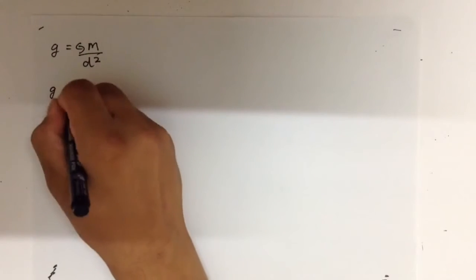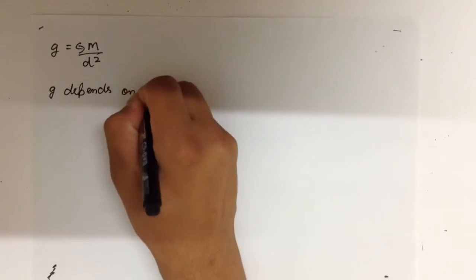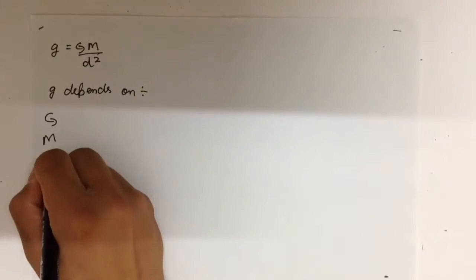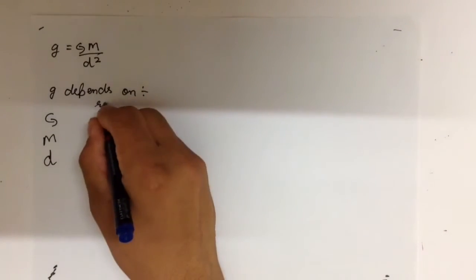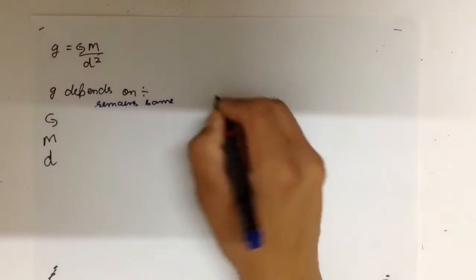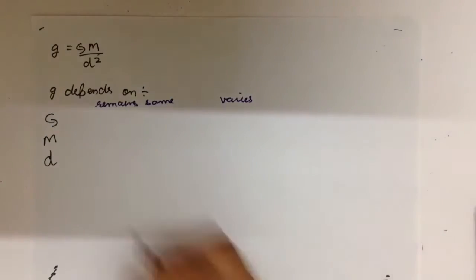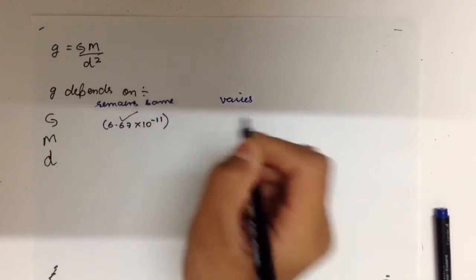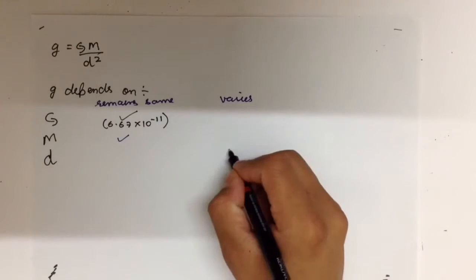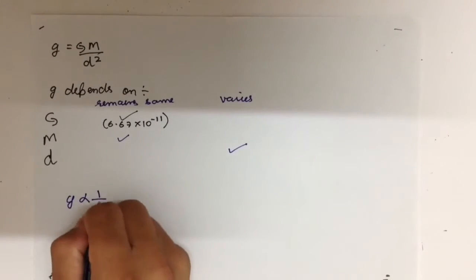Acceleration due to gravity depends on gravitational constant, mass, and distance. But since G is a constant, its value would always remain same, and so would the value of mass. Therefore, acceleration due to gravity depends largely on distance, and is inversely proportional to D square.